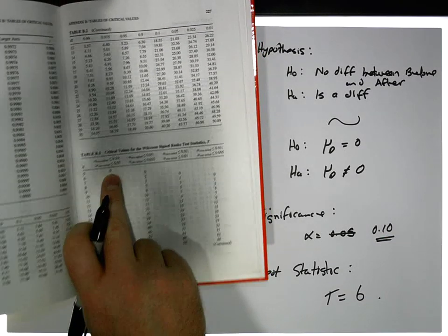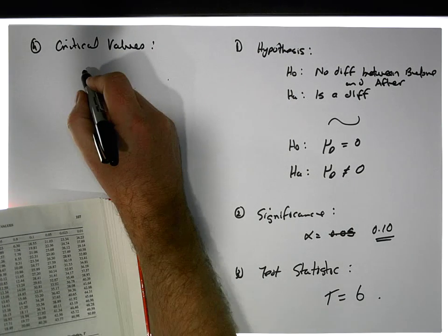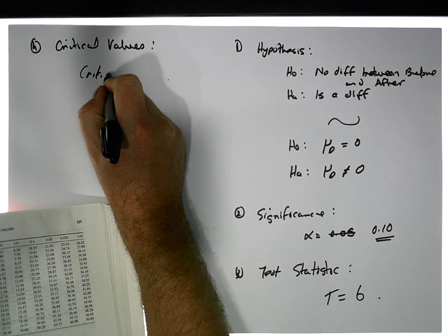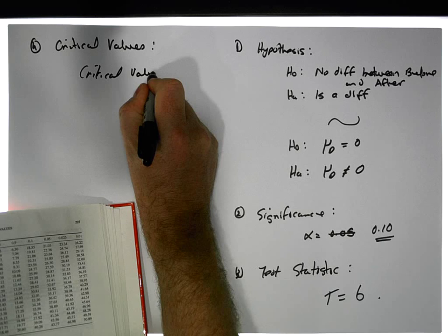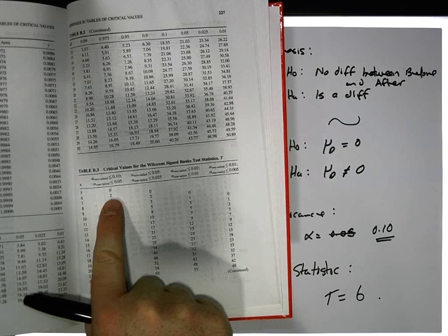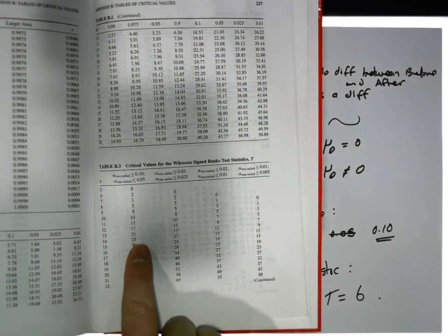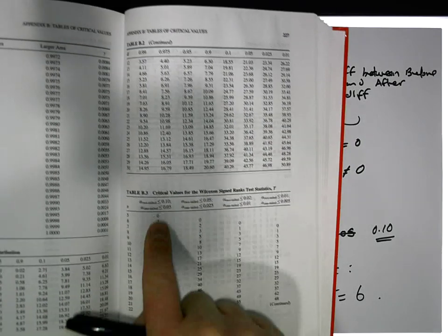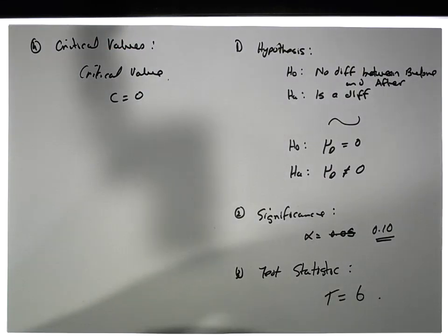This is just an unusual case, we have our critical value C equal to zero. You can see in all other cases when the sample size increases, the critical values are actually increasing as we go down through them. This is probably a bad example because of the sample size, but I think what's important is the procedure.